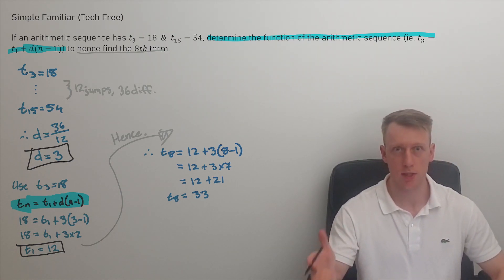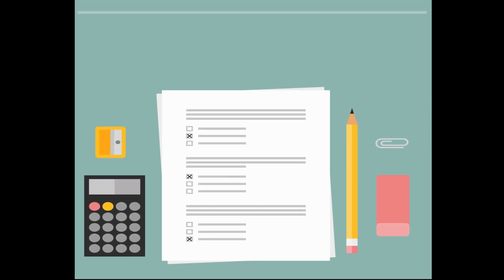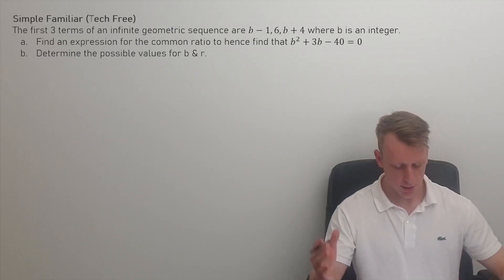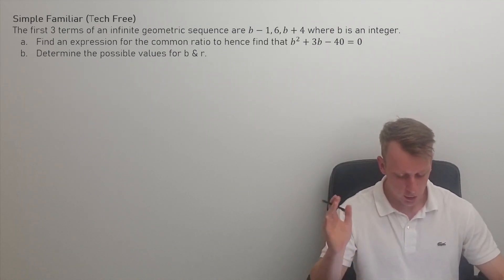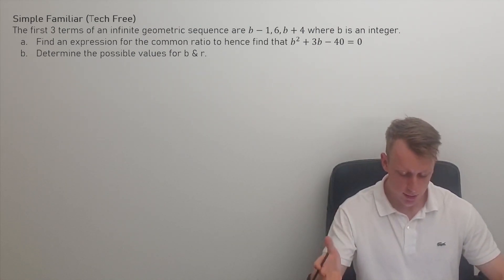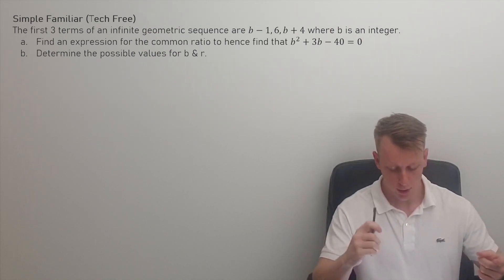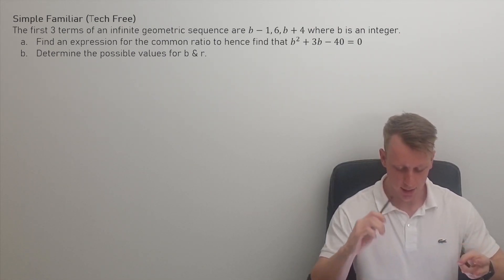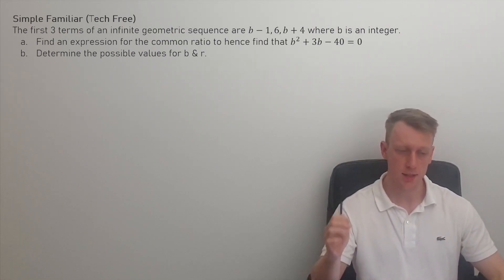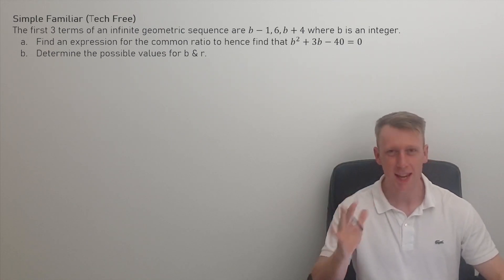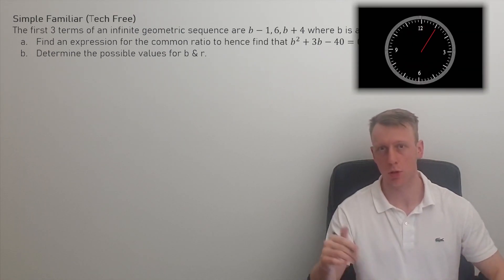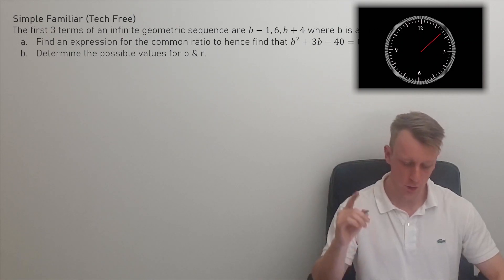That covers arithmetic sequencing simple familiar. Now we're going to have a look at some geometric sequencing simple familiar questions. It's another tech free question — we've got the first three terms: B minus one, and six, and then B plus four, where B is an integer. This question should take you about six to eight minutes, so pause it, put a stopwatch on, and off you go.